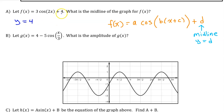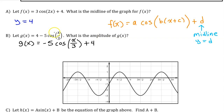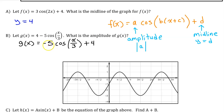It's a vertical translation by 4. Part B. Let g(x) equal 4 minus 5 times cosine of x over 3. What is the amplitude of g(x)? Having a 4 out in the front like this is the same as having 4 added onto the end. The amplitude comes from the a value, but it is always positive, so the amplitude is the absolute value of the a value. In this case, the a value is negative 5, so the amplitude is positive 5.